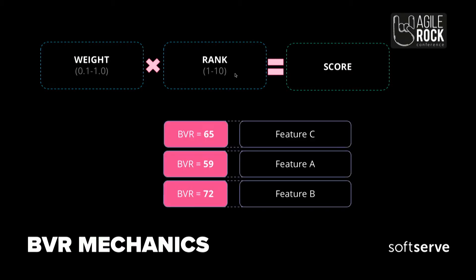Here's how it looks: feature A, B, C in the backlog — BVR rates are 65, 59, 72. The first benefit is simple: when management from multiple departments is arguing about what to do next, imagine you are the IT team with 5 requests from 5 different departments and all of them are high priority. You can only fit 2 into the next iteration. Here you can say that 72 and 65 are the higher-scored ones.